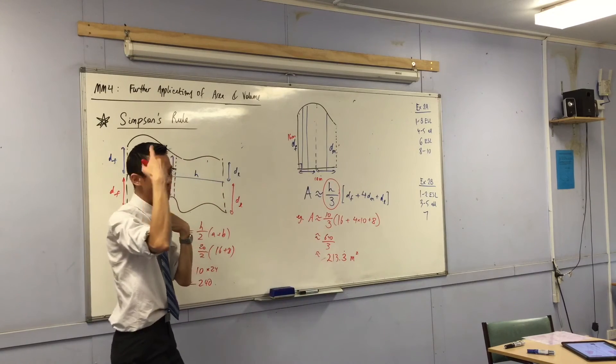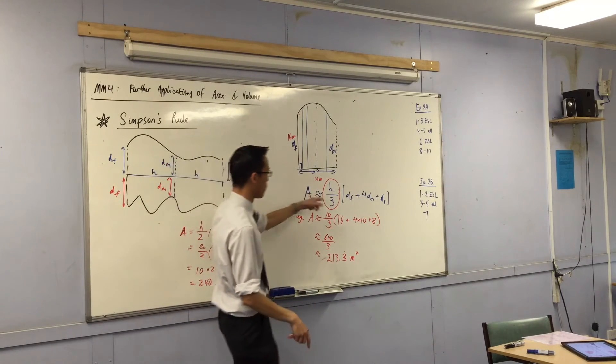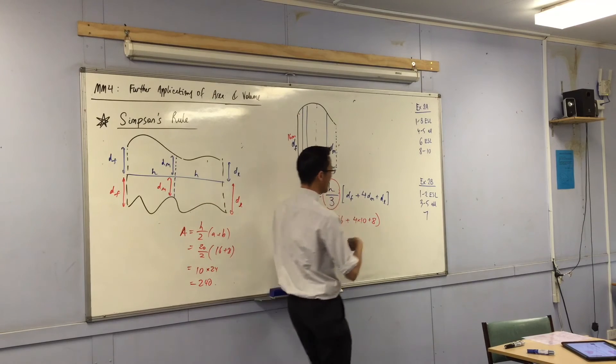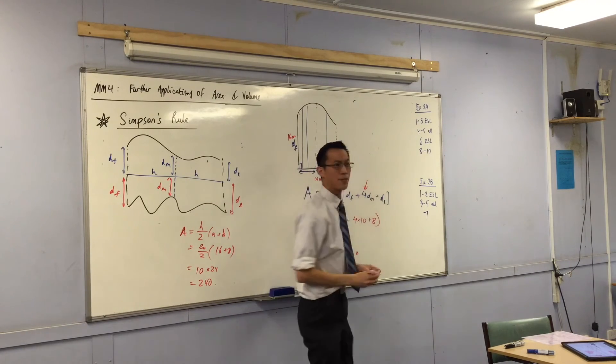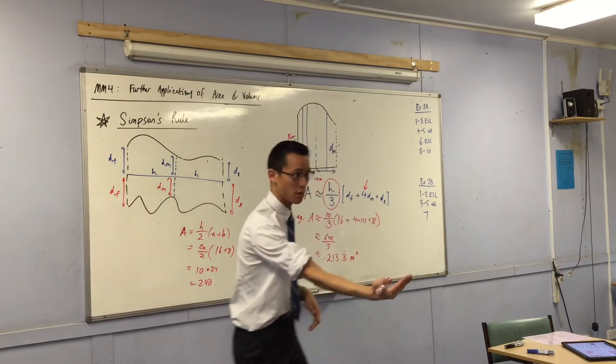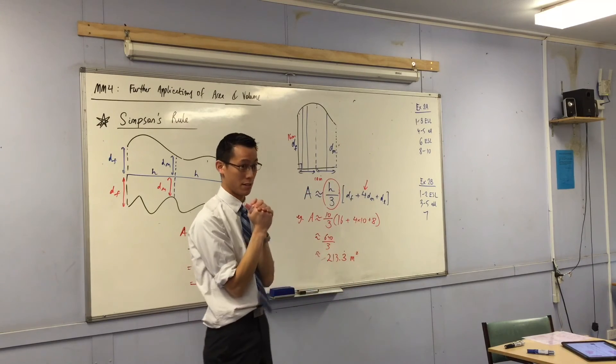So we use that as our little mental cue to remember what the right numbers are. This is always a bit tricky, but if you are ever in doubt, go to your formula sheet. It's there for this exact reason, okay?